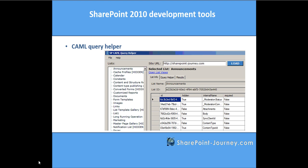The next tool is CAML Query Helper. Whenever you want to retrieve some information from lists or libraries, one approach is writing CAML queries and fetching the data. This tool will help you a lot while writing queries and can also be used to generate the required code for a particular CAML query. Let's open the CAML Query Helper.